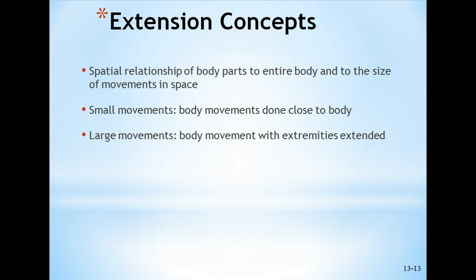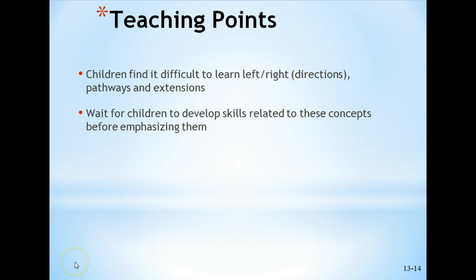Extension concepts refer to the body parts or the entire body and the size of movements in space — how we make small movements and large movements. For example: make your body as wide as you can while balancing. The last teaching point is that children find it difficult to learn left and right, directions, pathways, and extensions. You should wait for children to develop related skills before emphasizing those more difficult movement concepts in space awareness. That's the end of podcast number eight.